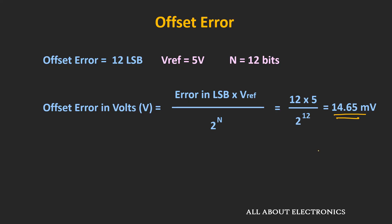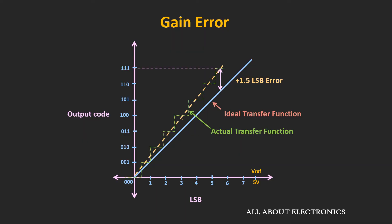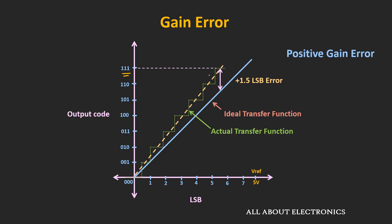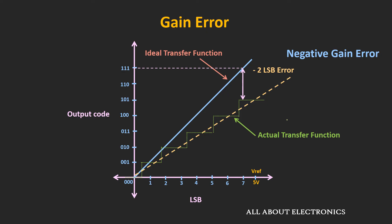The second type of error is gain error. In this error, the slope of the ADC transfer function changes. Basically, this error represents the difference between the ideal voltage at which the converter provides full-scale output versus the actual voltage at which it provides the full-scale output code — in other words, the difference in ideal and actual slope. All these measurements are done after calibrating the ADC readings for offset error. As you can see in this graph, the gain error is +1.5LSB. Whenever the actual slope lies above the ideal slope, the gain error is positive; if it lies below, the gain error is negative.